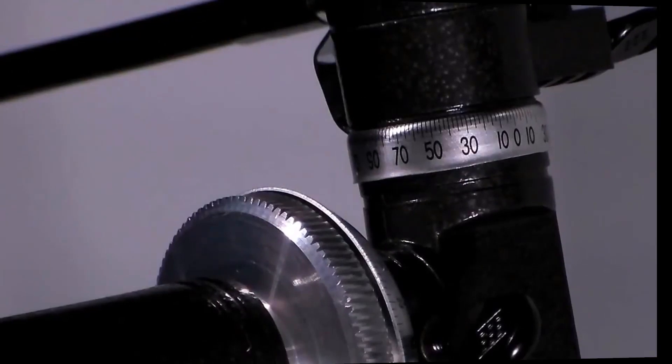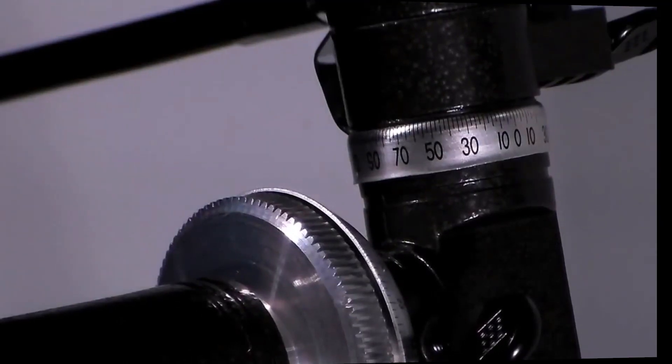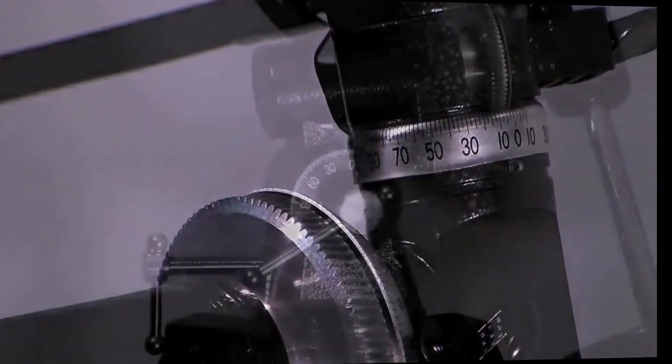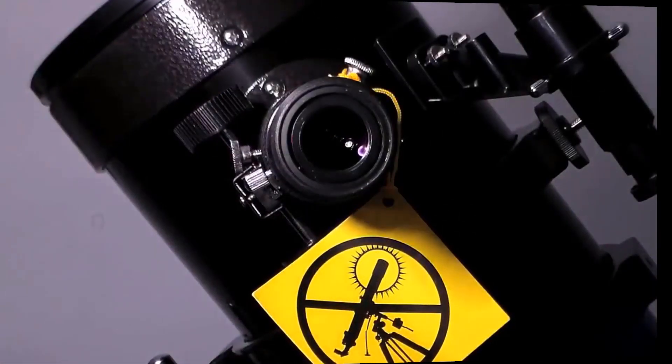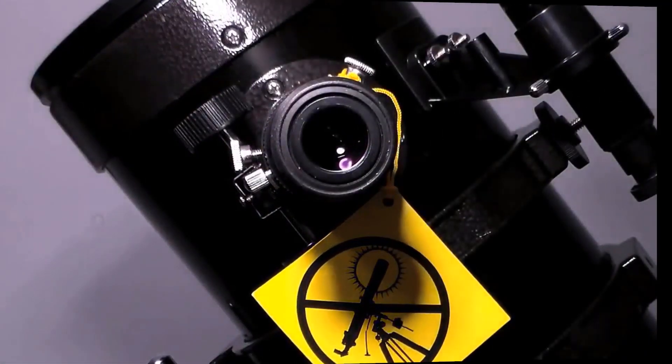This telescope has declination settings and right ascension settings. In astronomy, declination is one of the two angles that locate a point on the celestial sphere in the equatorial coordinate system.